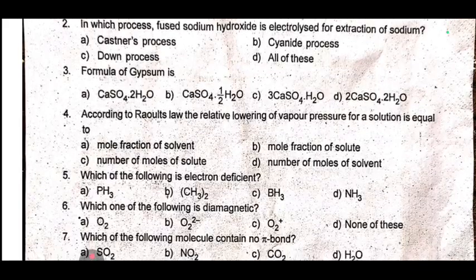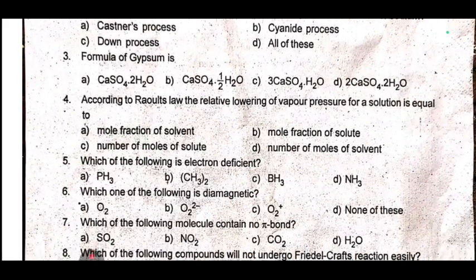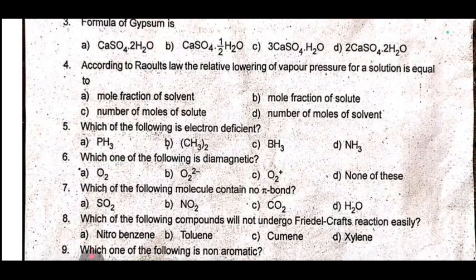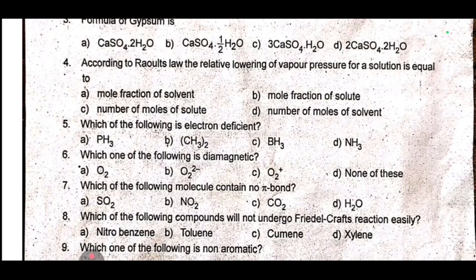Question 5: Which of the following is electron deficient? Question 6: Which one of the following is diamagnetic? Question 7: Which of the following molecules contain no pi bond?